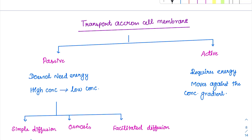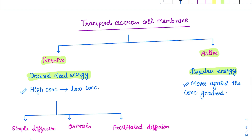Transport across cell membrane can happen actively or passively. Passive means there is no need of any energy, whereas active means it requires energy. Passive transport usually happens from high concentration to low concentration — whenever any substance moves from high to low concentration, no energy is needed. When moving against the concentration gradient, energy is required, which is active transport.